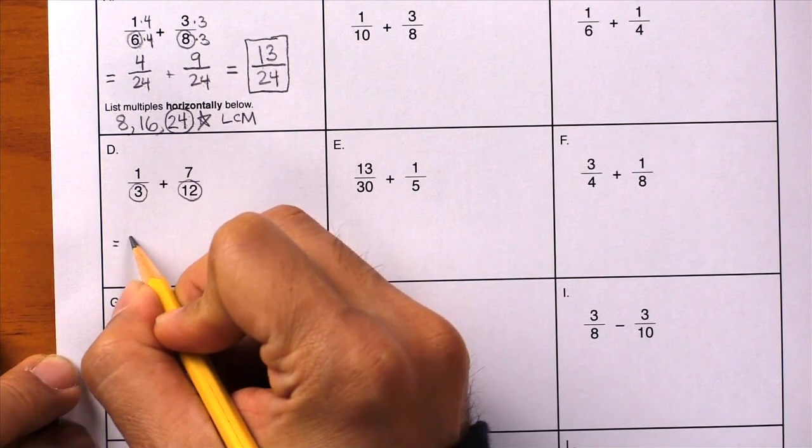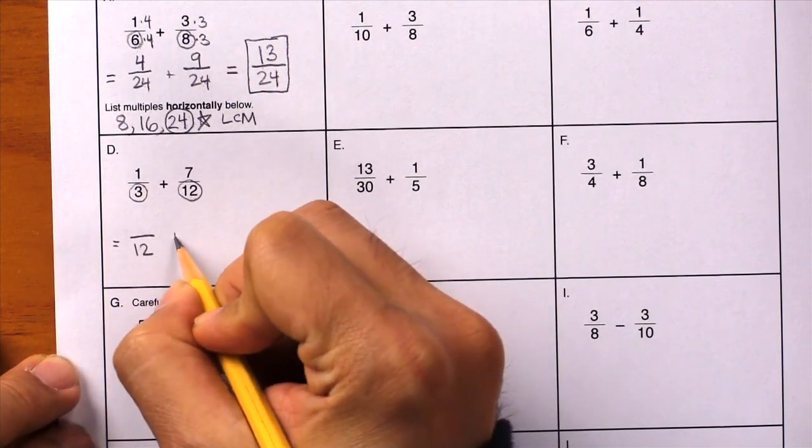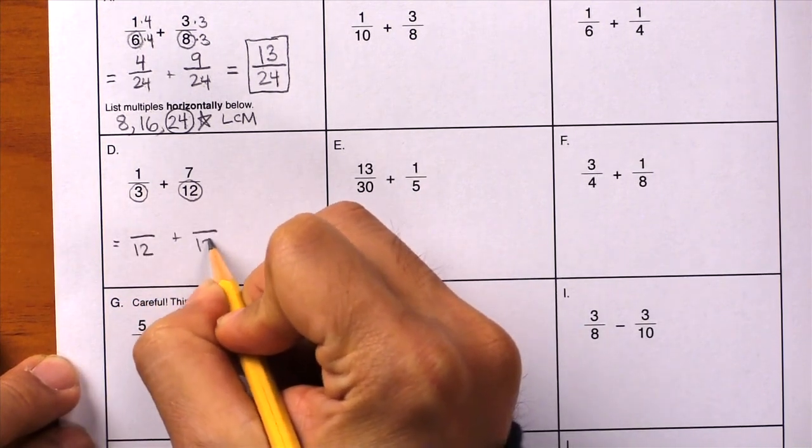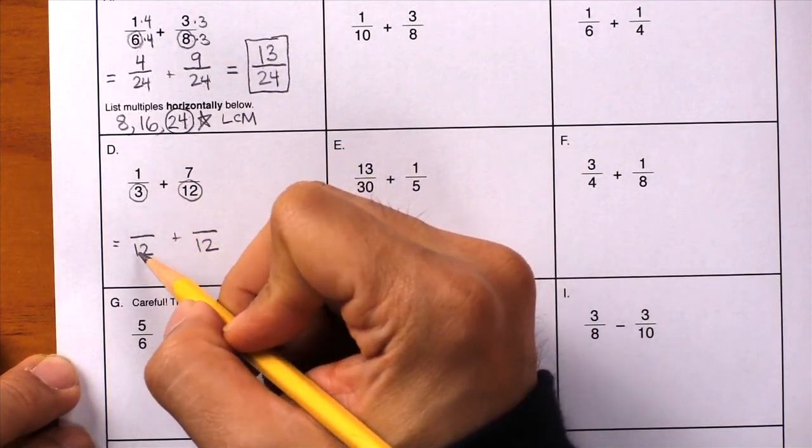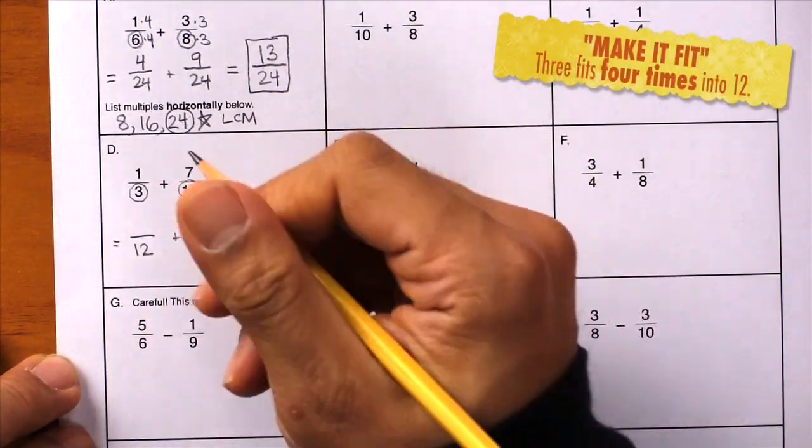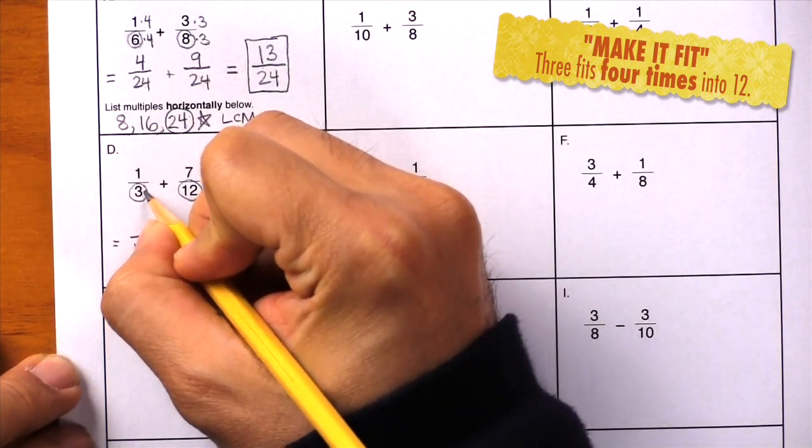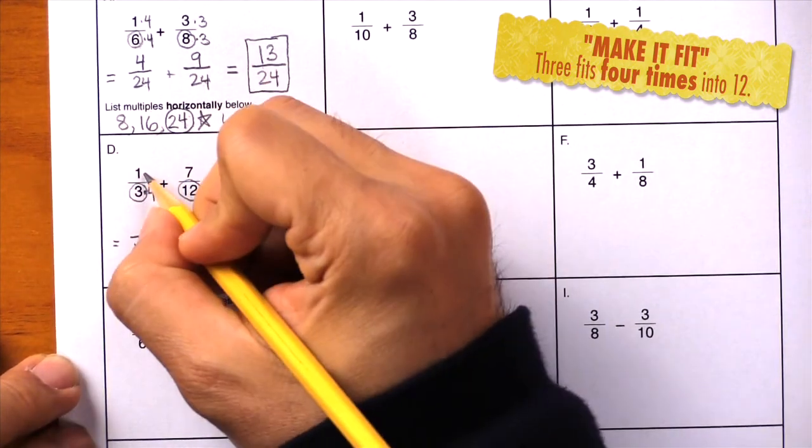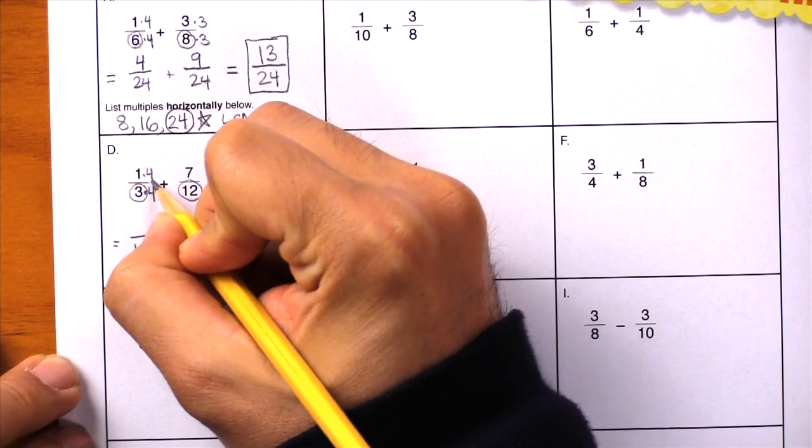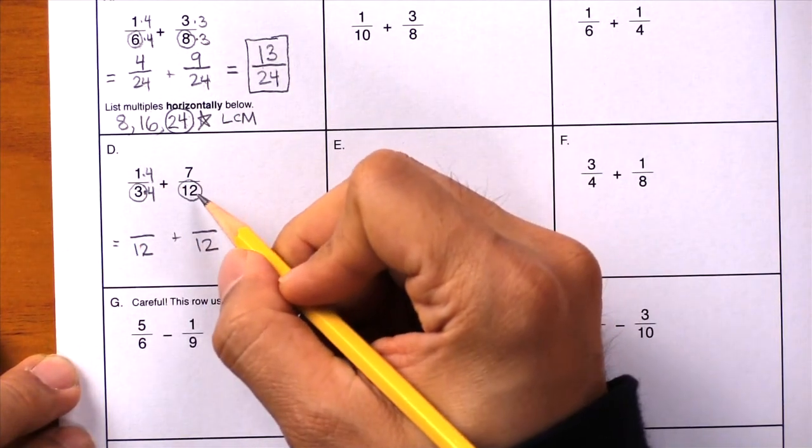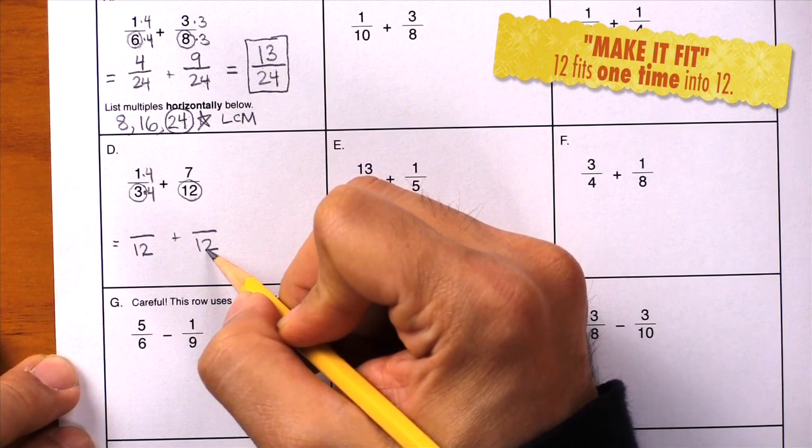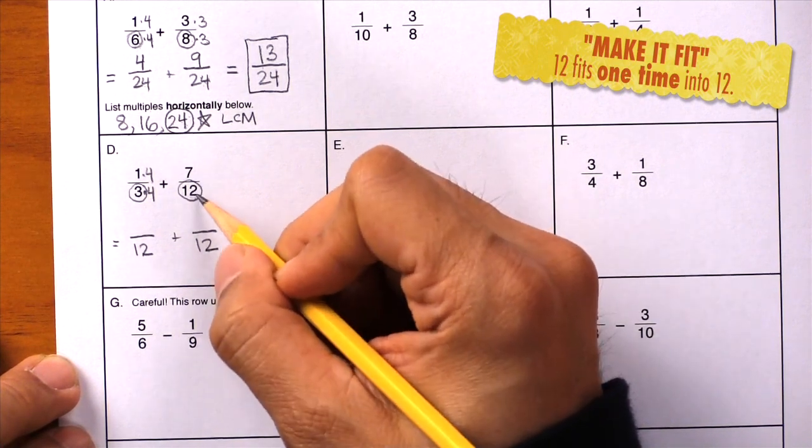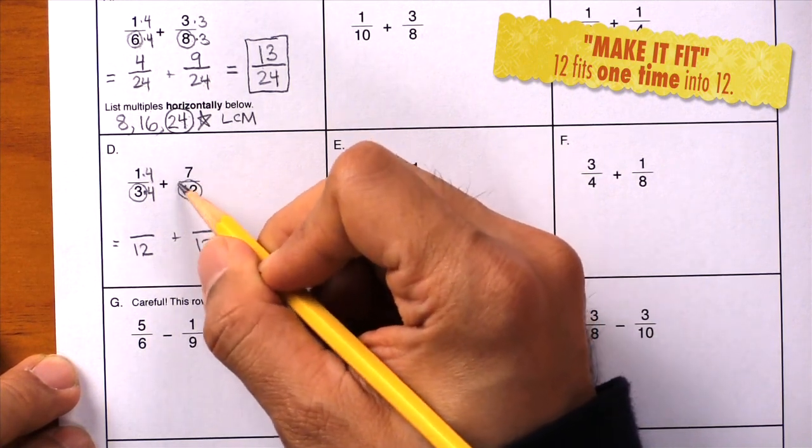Here, blank over twelve plus blank over twelve. How did we get from three to twelve using multiplication? And we did that by multiplying by four times four in the denominator times four in the numerator. Here, how did we get from twelve to twelve using multiplication? And we did that by multiplying by one. And we actually don't need to change this at all. So I'm just going to leave this side alone.